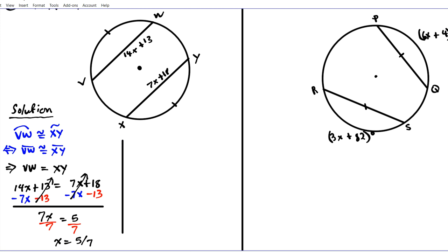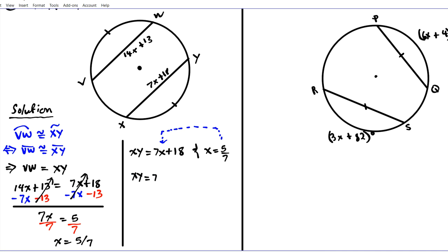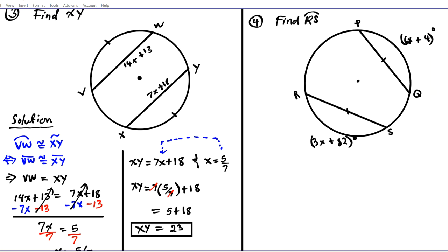Remember to always answer the actual question. XY equals 7x plus 18, and x is 5 over 7. Substituting: 7 times (5/7) plus 18. Using order of operations, 7 times 5/7 equals 5, so 5 plus 18 equals 23. The length of chord XY is 23 units.